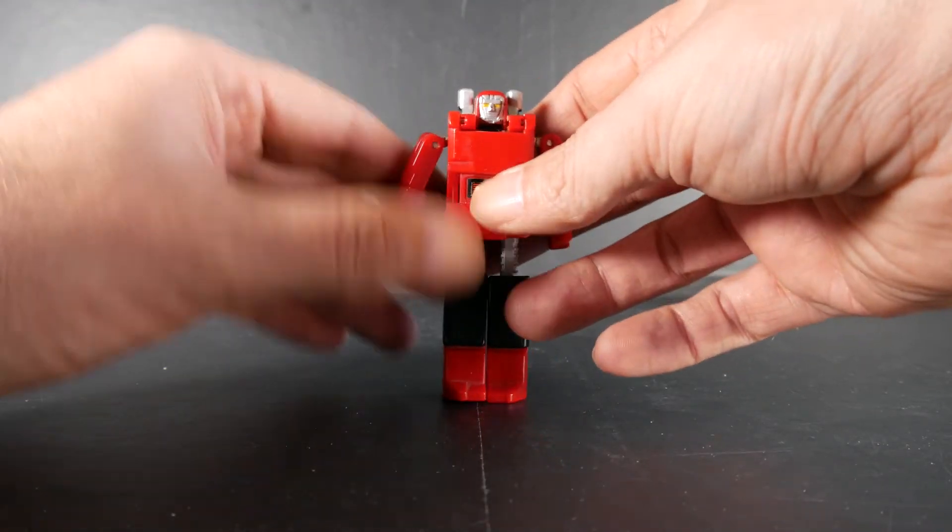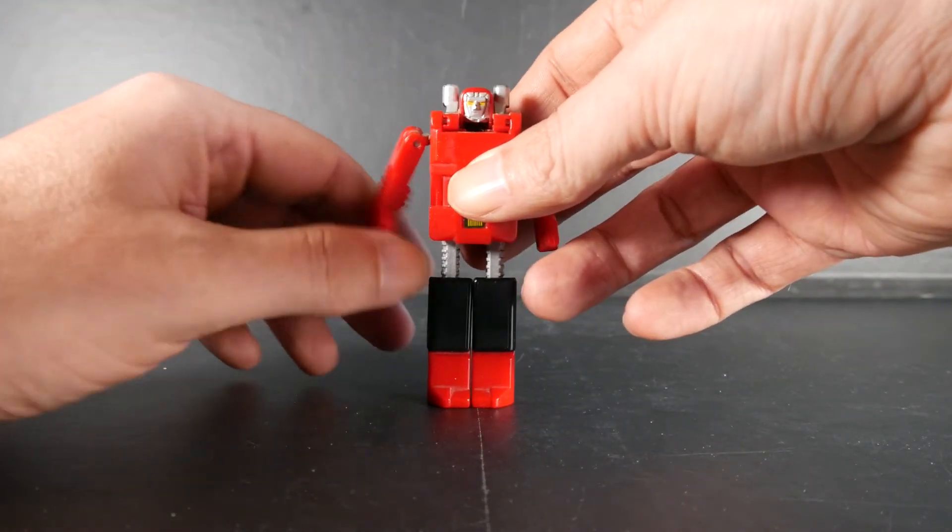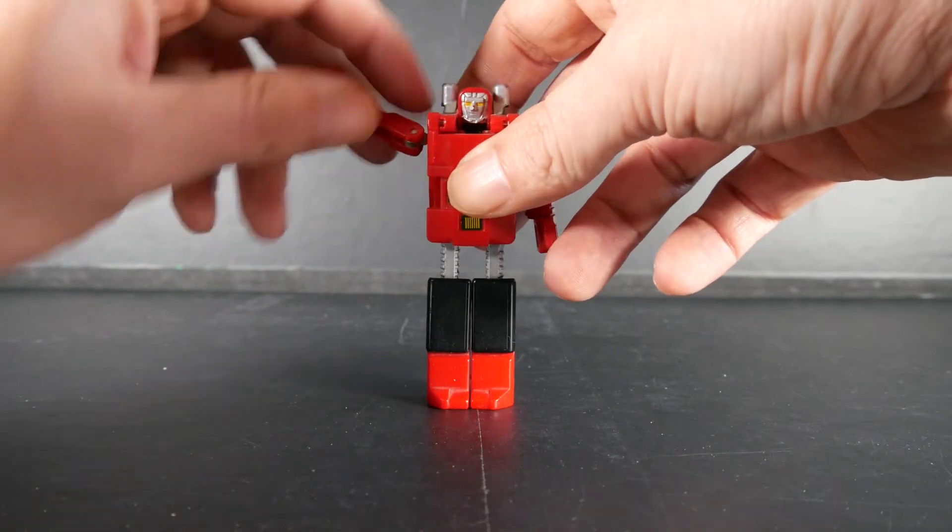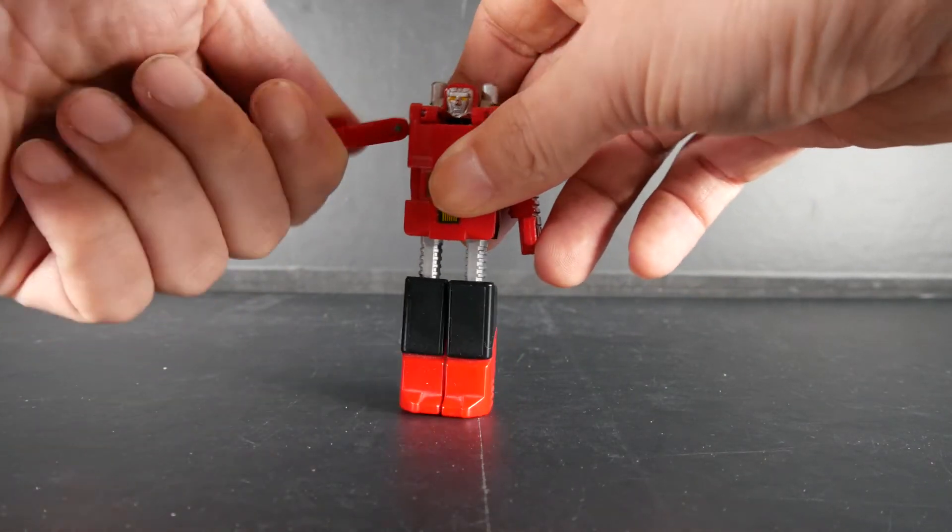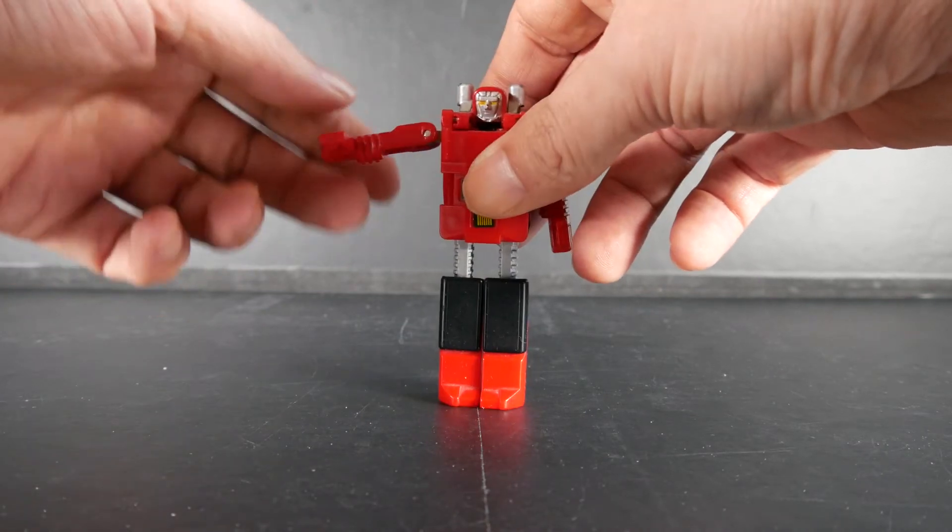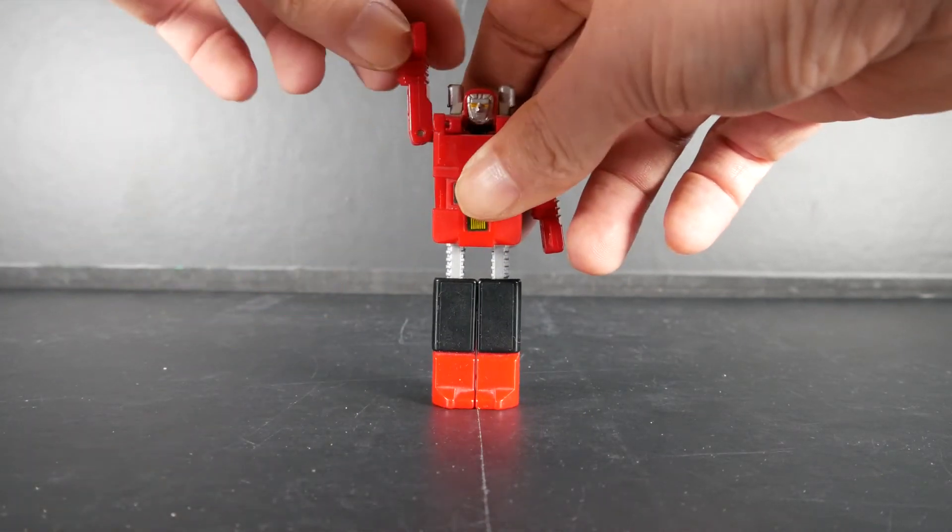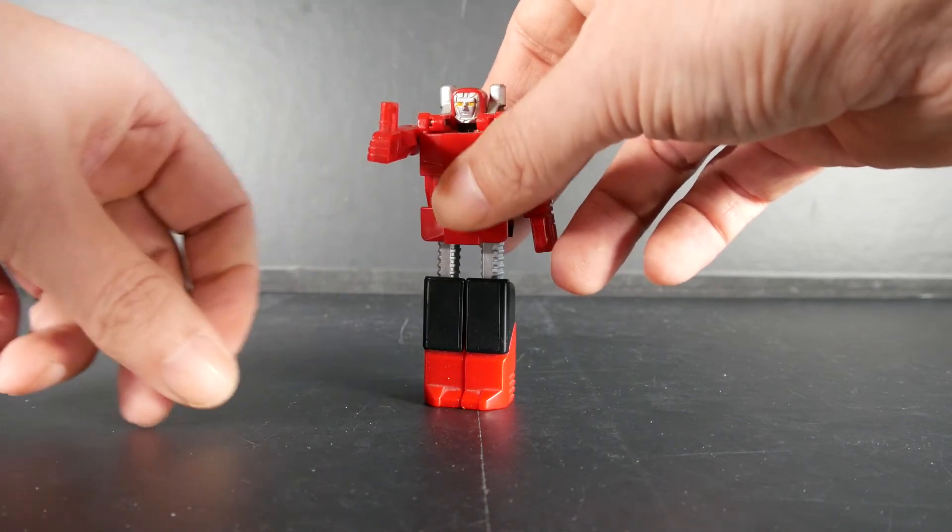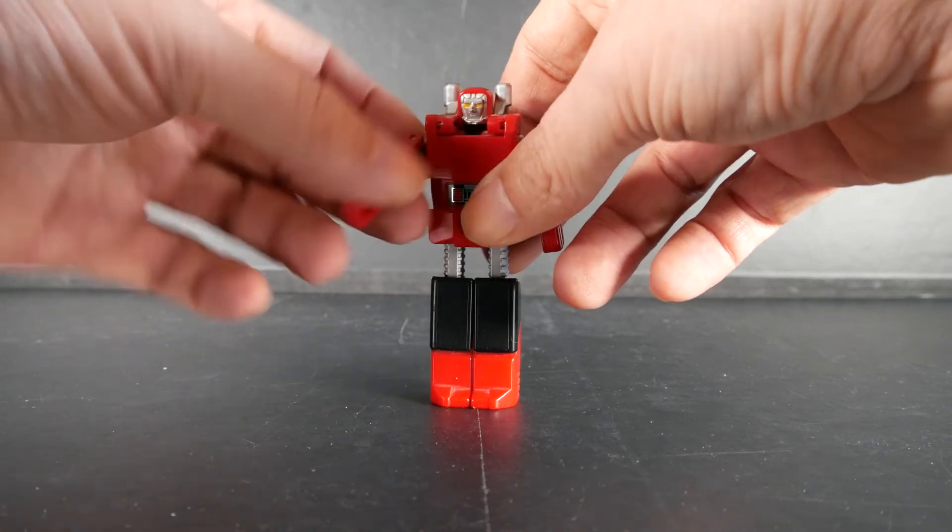Alors point de vue des articulations évidemment, gobo oblige. On a le bras, on peut lever. Alors ce qui est bien, c'est comme il y a la transfo, on a un ball joint qui permet clairement de faire tourner le bras complet. On peut le lever entièrement. On peut passer le bras en avant. Bon il n'y a pas de coude par contre.